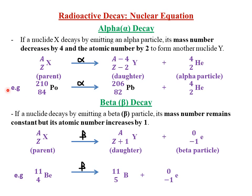For example, polonium is decaying by releasing an alpha particle to form lead. Polonium has a mass number of 210 and atomic number 84. We need to reduce the mass number by 4, so 210 minus 4 gives 206, which becomes the mass number of lead.